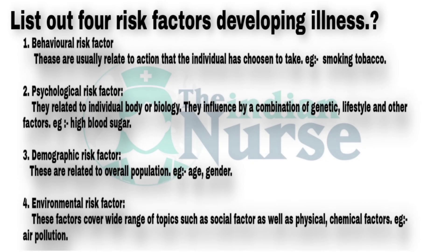Next question: list out four risk factors for developing illness. First one is a behavioral risk factor. Second one is a psychological risk factor. Third one is a demographic risk factor. And fourth one is an environmental risk factor. The first one, behavioral risk factor — these are usually related to actions that the individual has chosen to take. For example, smoking tobacco.